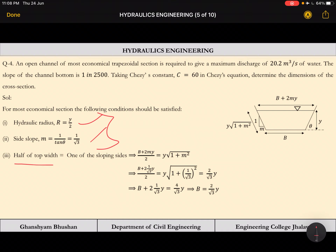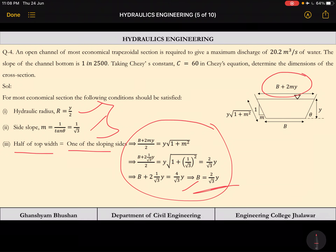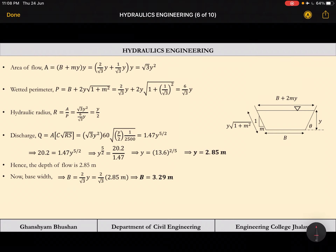Half of the top width equals one sloping side, from which we get B = (2/√3)·Y. With M = 1/√3, the area is A = (B + MY)·Y = √3·Y². The wetted perimeter is (6/√3)·Y. The hydraulic radius R = Y/2. These geometric relationships for the most economical trapezoidal section are now fully expressed in terms of Y.